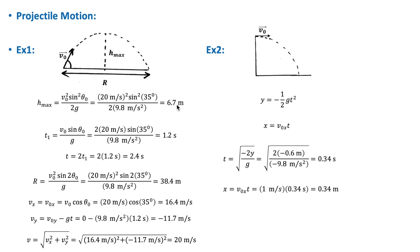The time to reach maximum height, t₁, is 1.2 seconds. The total time of flight from launch until it hits the ground is 2t₁ = 2.4 seconds.